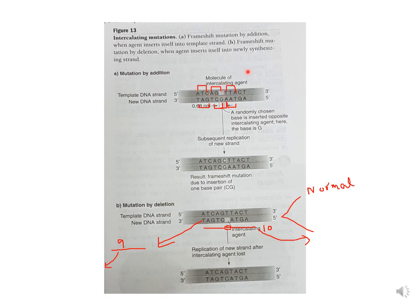When an intercalating agent is added to the template DNA, in the next round of replication there will be an addition, changing the reading frame — the genetic codon shifts and the whole framework changes, resulting in a frameshift mutation. When the intercalating agent intercalates into the new strand, it results in deletion in subsequent rounds of replication. This picture is also from Russell's textbook. I hope you have understood the topic — mutations is a vast topic, so please refer to different books for better understanding. Thank you, students; we will meet in the next lecture.